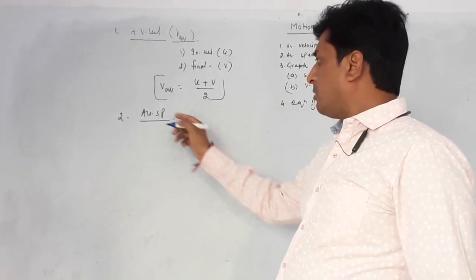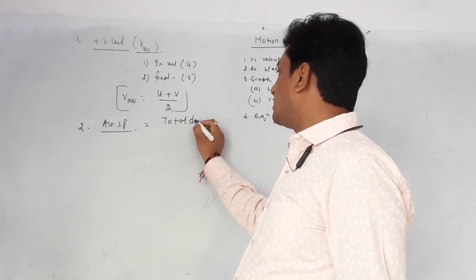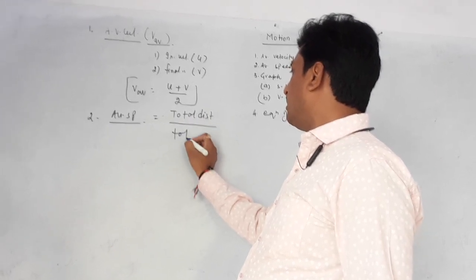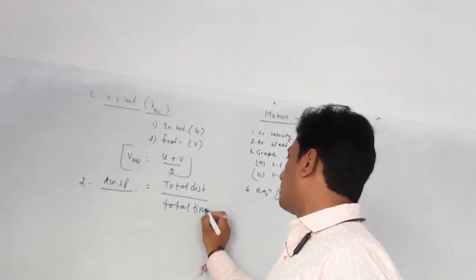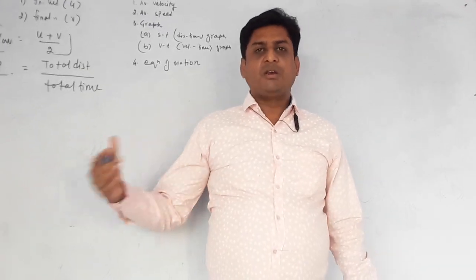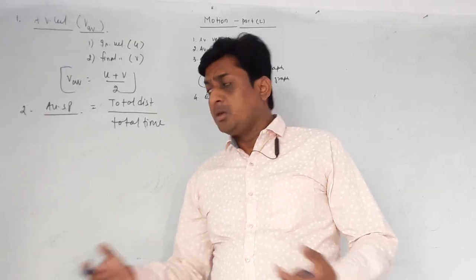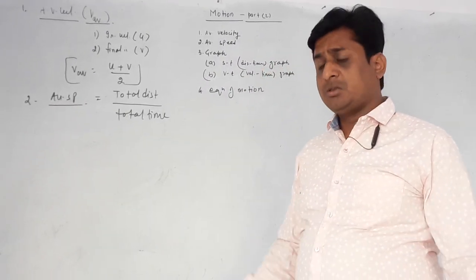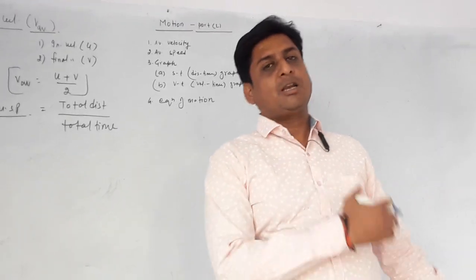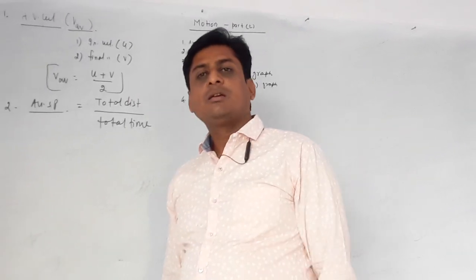When you calculate average speed, it is total distance divided by total time. Whatever distance is travelled by the body in different phases, divided by the different phases of time, gives average speed. Sum all the distances of all the phases and sum all the times of all the phases, then divide these two to get average speed.